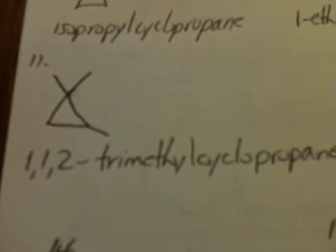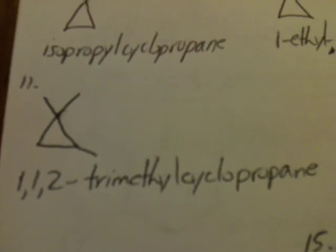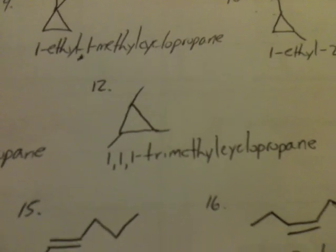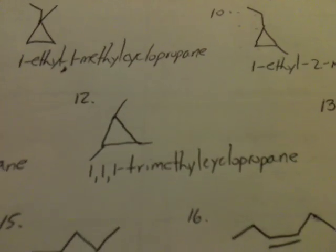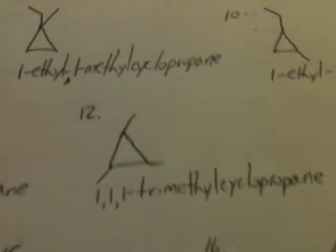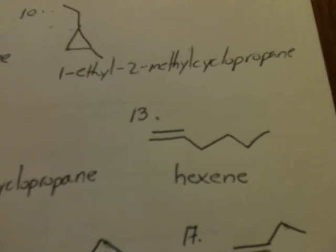That brings us down to cyclopropanes with 3 methyl groups. The first possibility is 1,1,2-trimethylcyclopropane, and then we can redistribute all the methyl groups all around the molecules. We get 1,1,1-trimethylcyclopropane, and that uses up all the possibilities for ringed isomers. So now we're looking at isomers with a double bond.